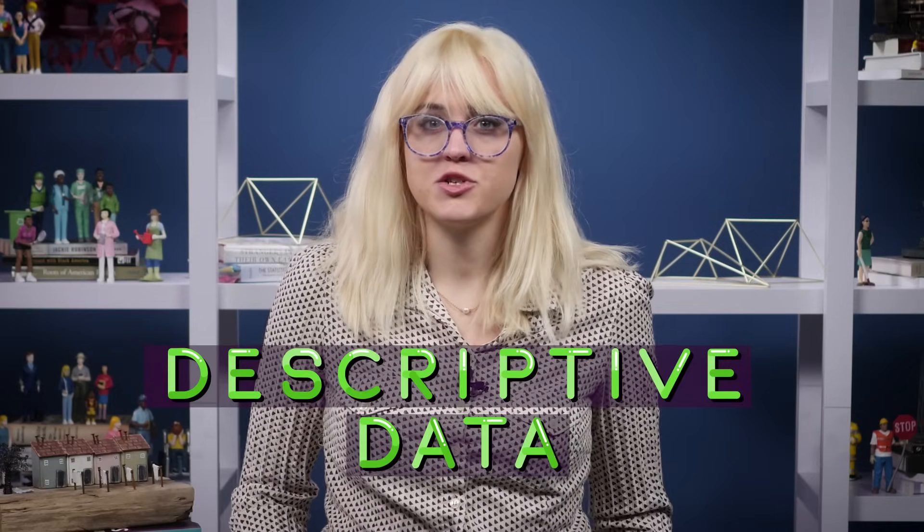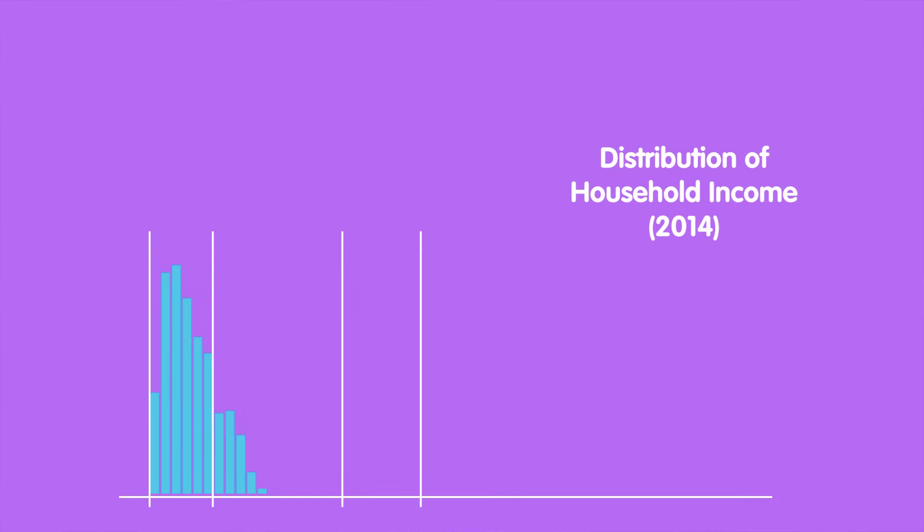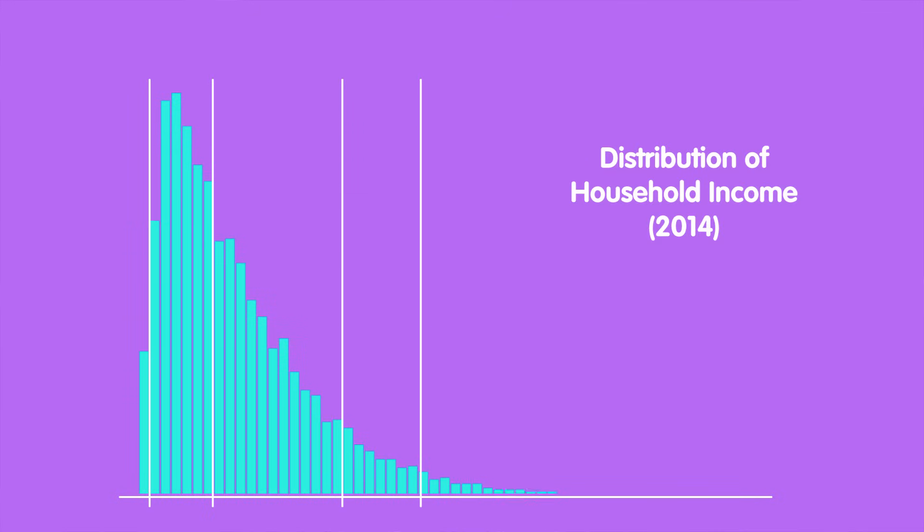Basically, quantitative evidence is information that you can count or tally up. But this doesn't just mean number-based data like income or age — you can also use it to categorize people or things, like the state you live in, your gender, or your race. And quantitative evidence can be used in lots of different ways. For example, there's descriptive data, which does just what it sounds like — it describes facts relevant to the question you're researching. Like, maybe you want to know how income is distributed across households in the United States. This graph is the distribution of household incomes in 2014, produced by the U.S. Census Bureau.